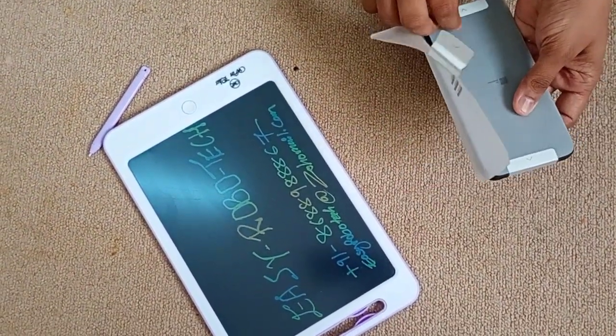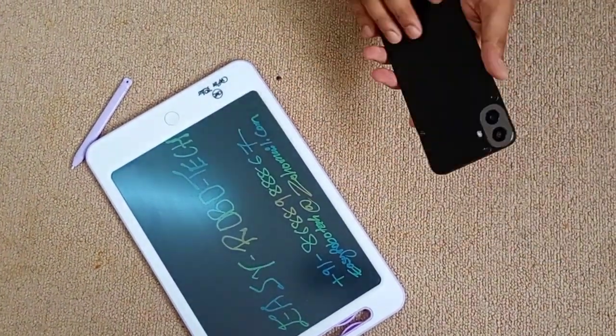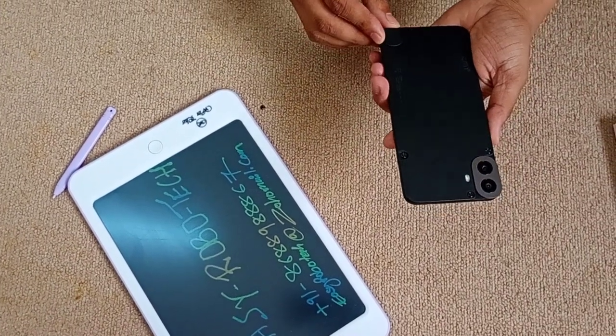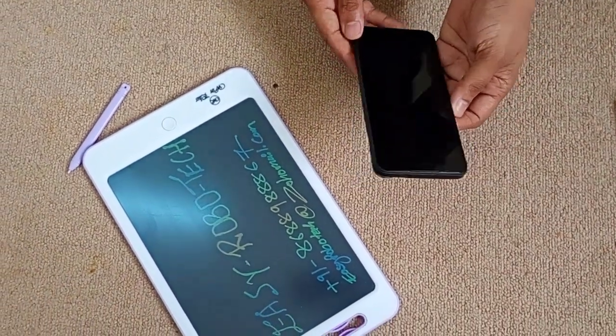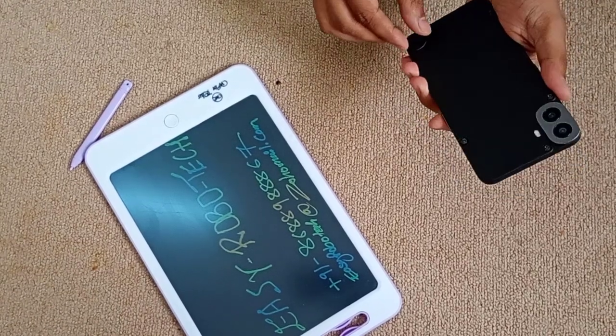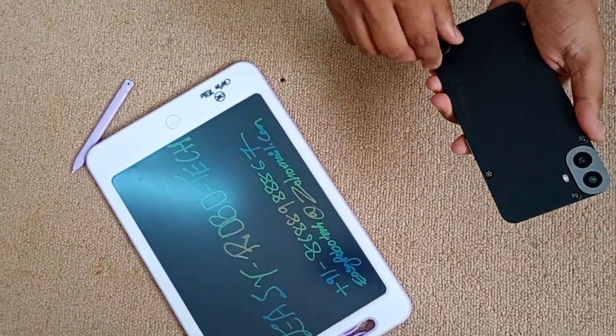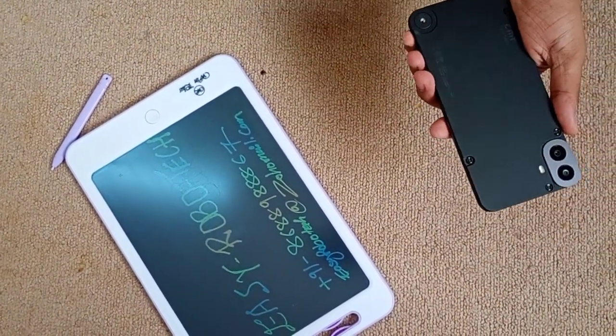Now, let's get to the phone itself. The NothingPhone 1CMF we have here is in black, which is one of the color options available at launch. Other colors you can choose from include orange, blue, and sky blue. The black variant looks sleek and modern, fitting well with Nothing's clean design philosophy.